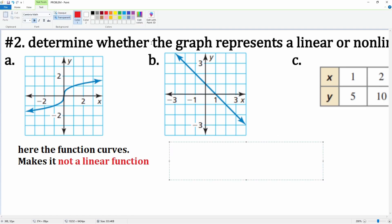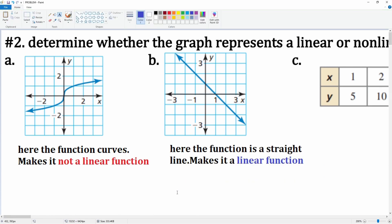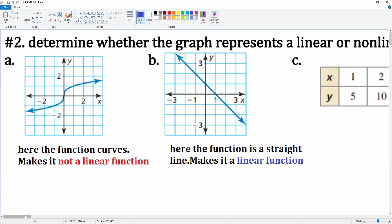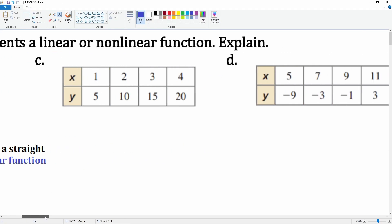For this one, for b, the function is a straight line, which makes it a linear function. So this is a linear function because it is a straight line. What do I mean by a straight line? It means it has a constant rate of change.